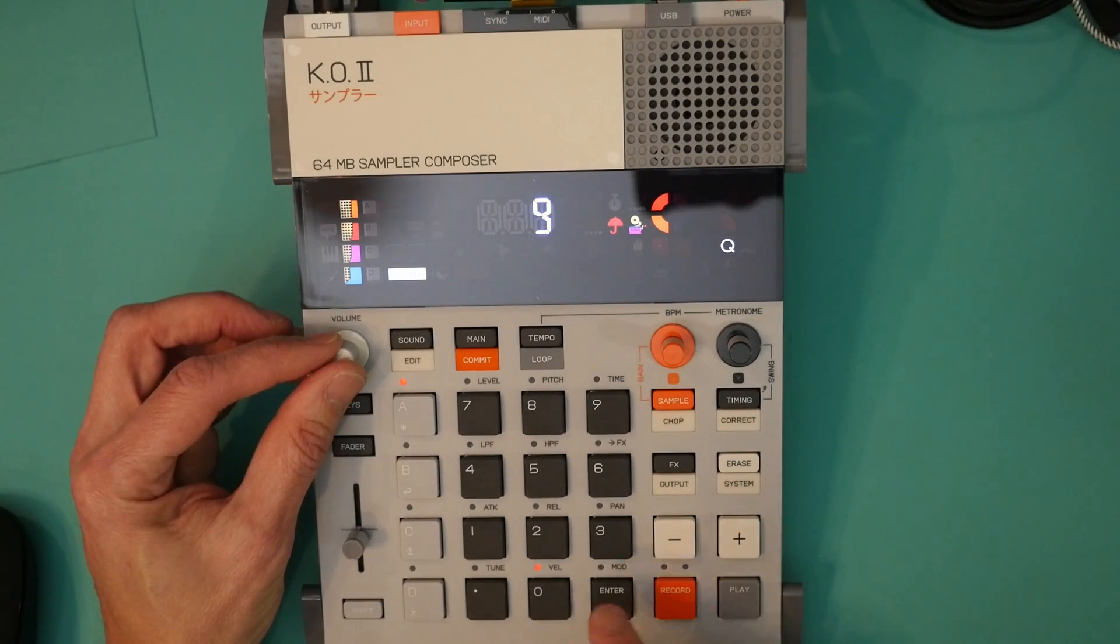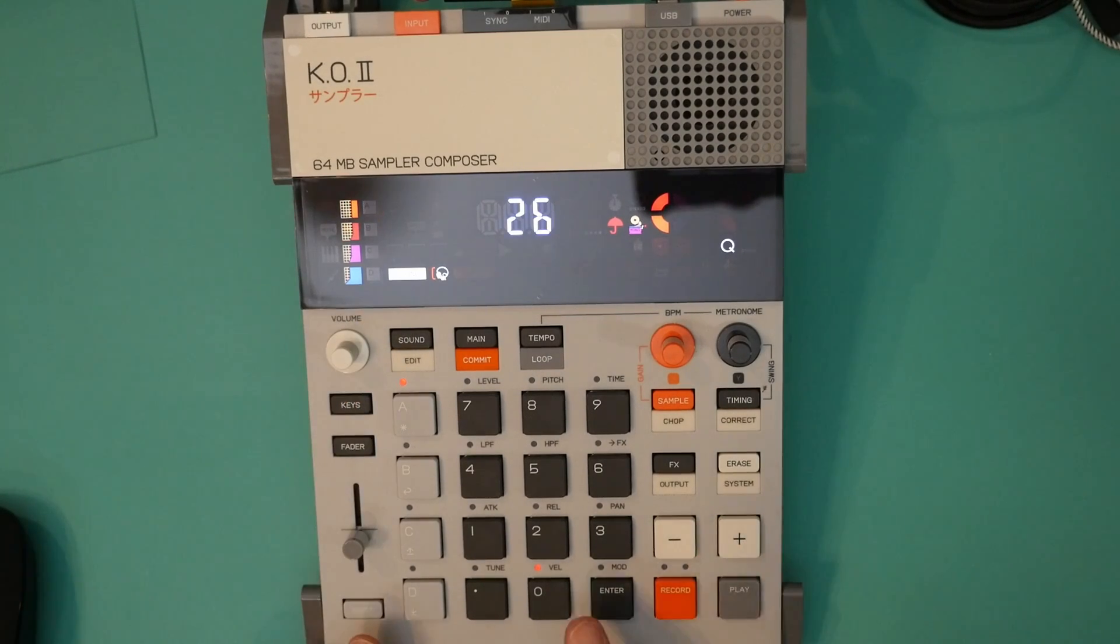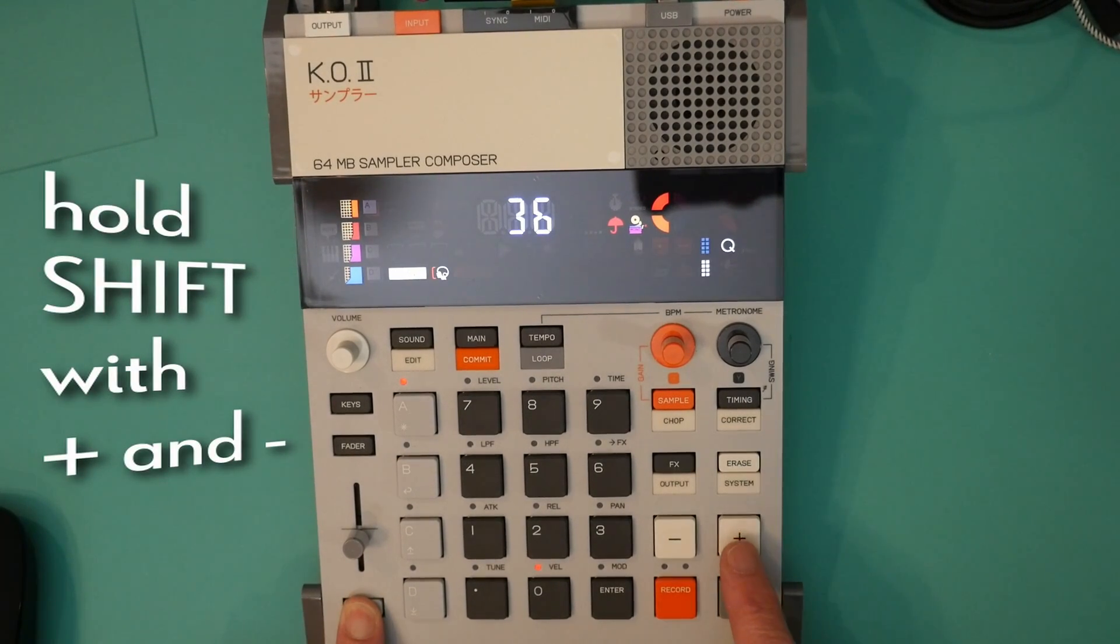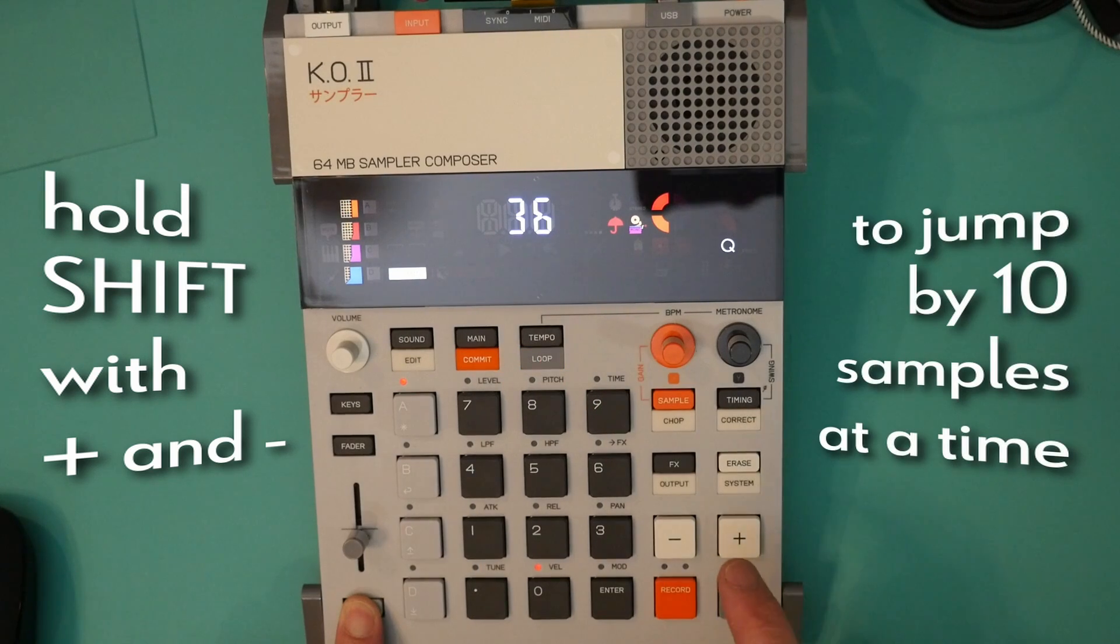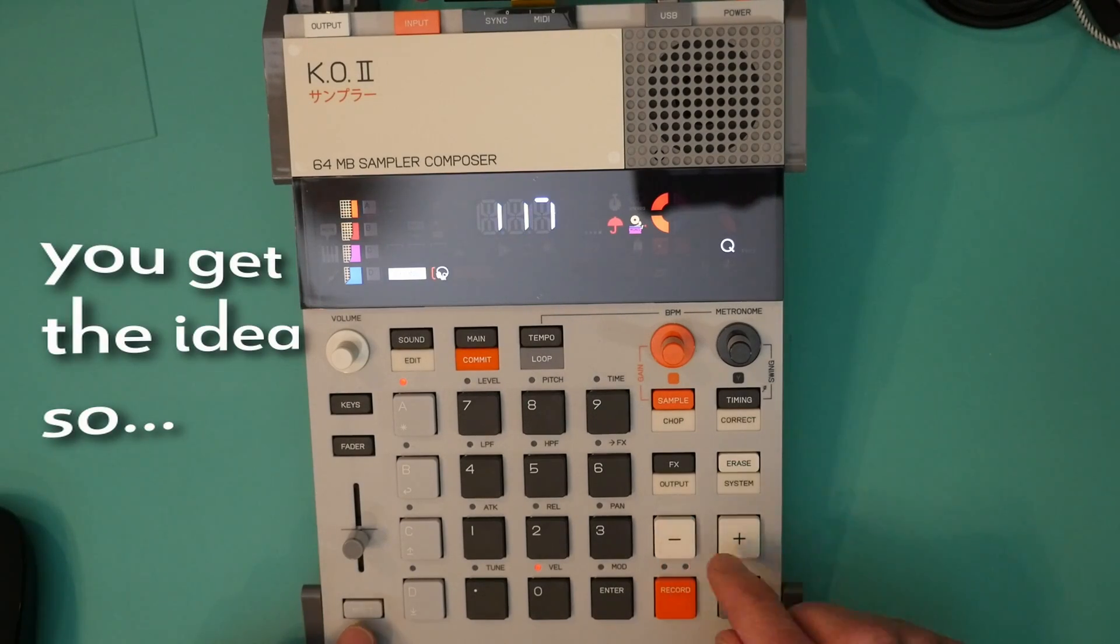Now on this second pad, I'm going to choose a snare. Now I know the snares are further up. There's an accelerator to this process where I can hold shift and hit plus to go up by 10 at a time. And there we go. Now I'm in the 100s, which are snares. I think I like that one.